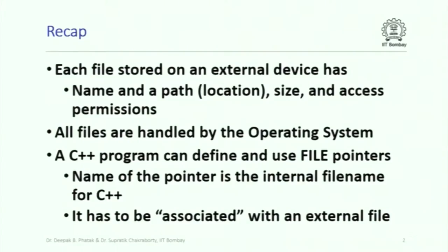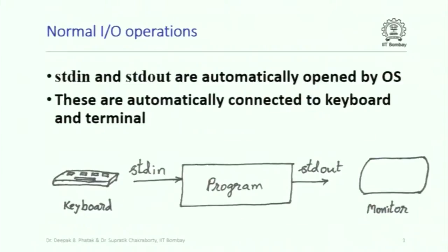A C++ program can define and use files, but internally it uses what is known as file pointers, and the name of the file pointer becomes the file name within the program. Such a pointer name cannot be used unless you associate that internal pointer file name with a physical external file. Such an association can be done through functions available in C++.